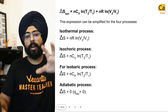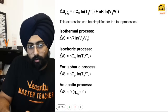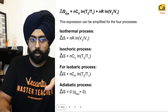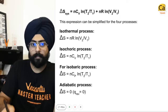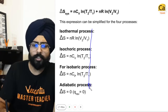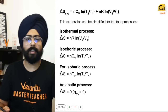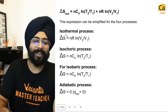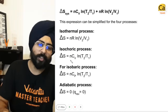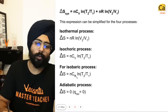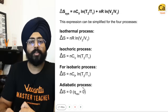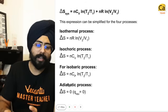For an ideal gas under reversible conditions, the entropy change of the system is: ΔS = nC_V ln(T₂/T₁) + nR ln(V₂/V₁). For different processes: isothermal — ΔS = nR ln(V₂/V₁); isochoric — ΔS = nC_V ln(T₂/T₁); isobaric — ΔS = nC_P ln(T₂/T₁); adiabatic — since Q_rev = 0, ΔS = 0.